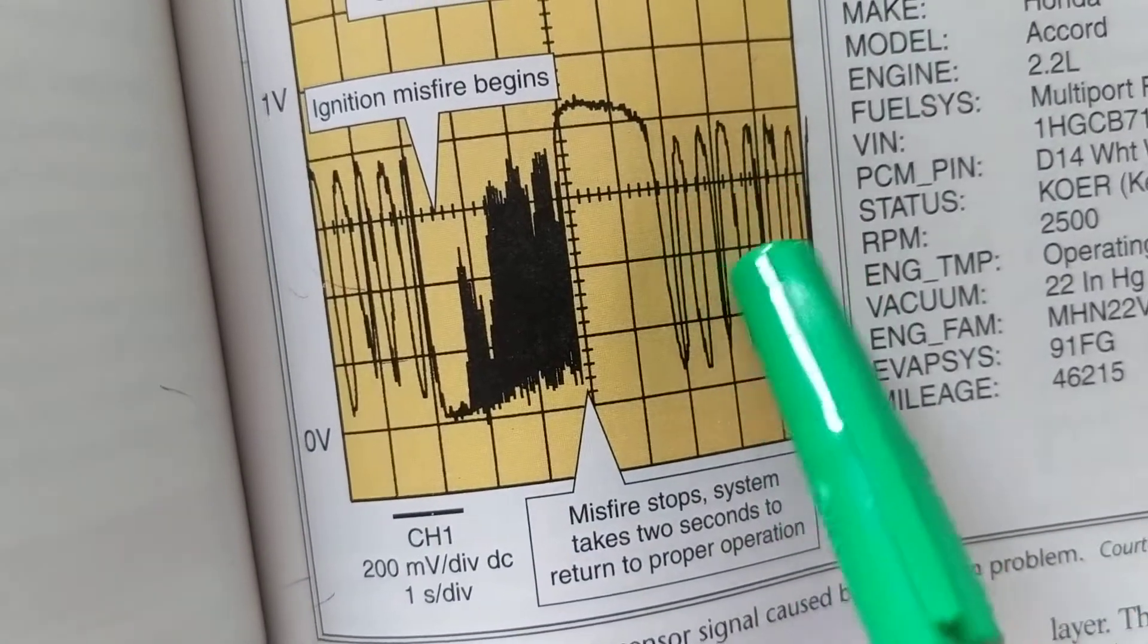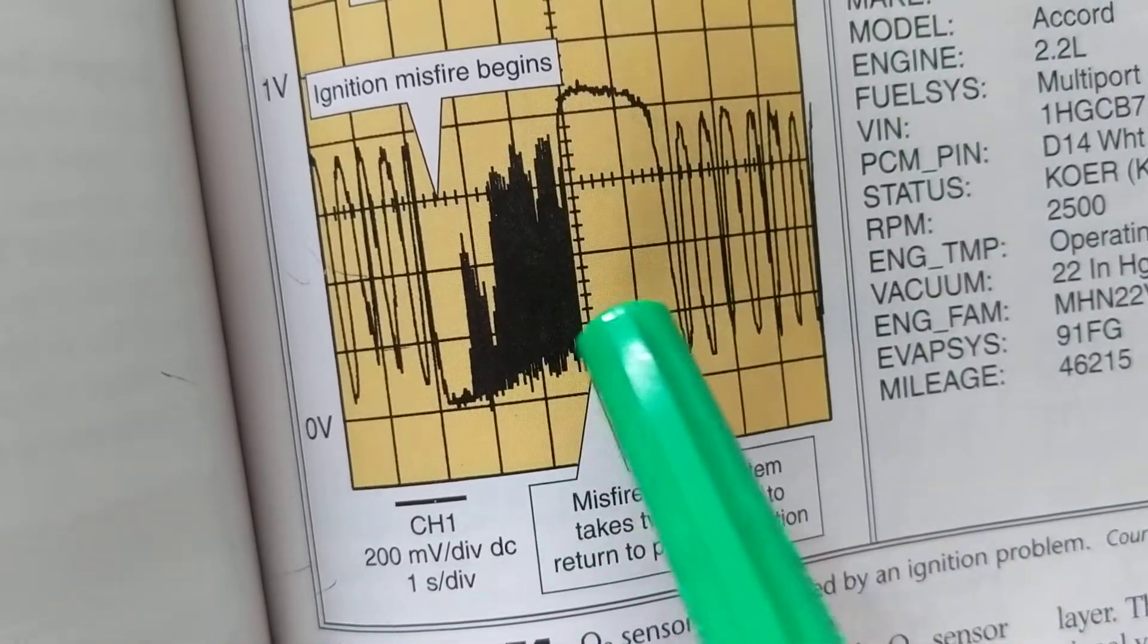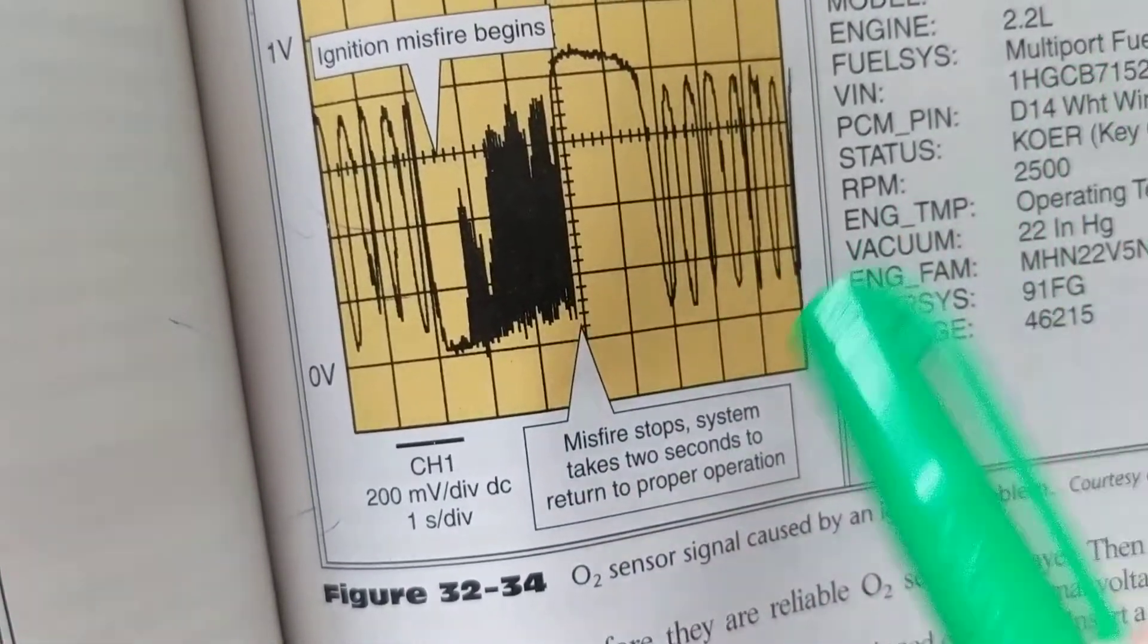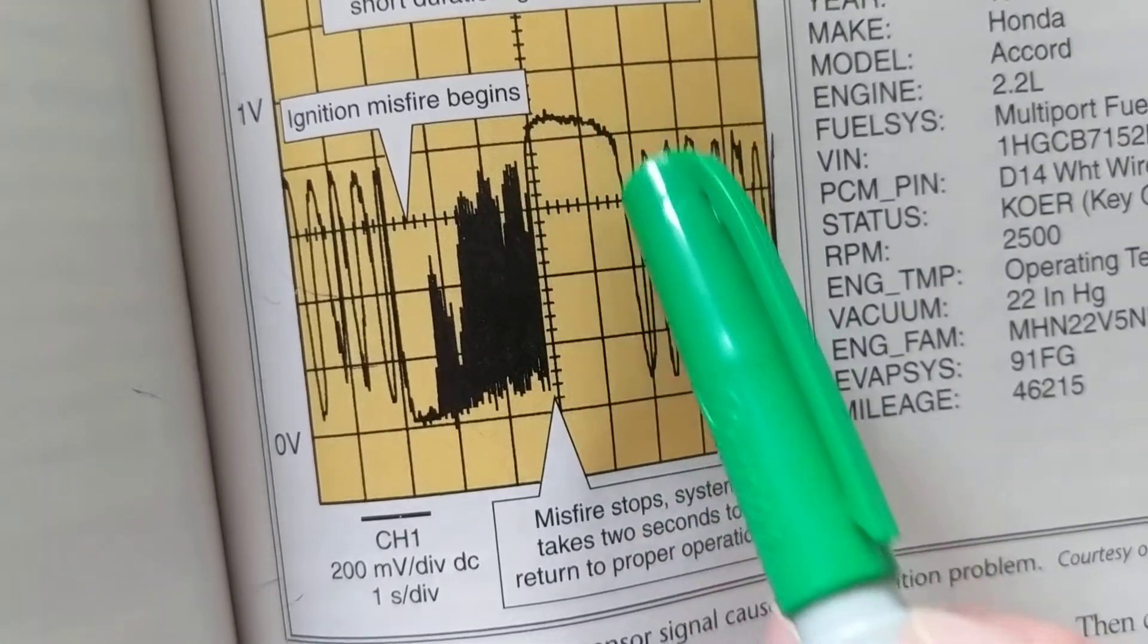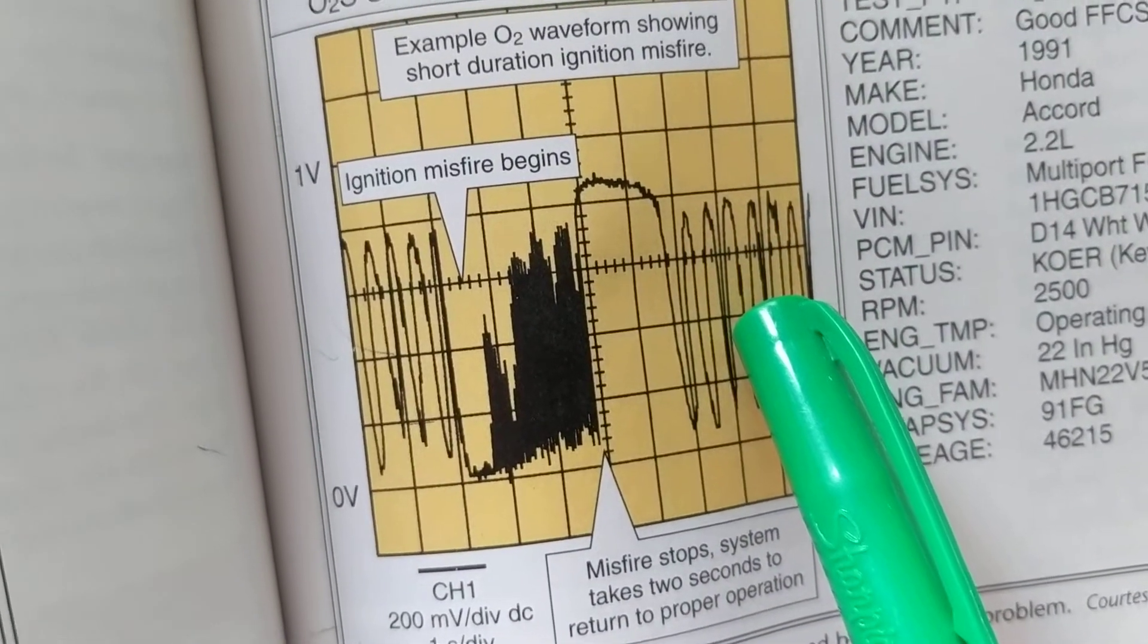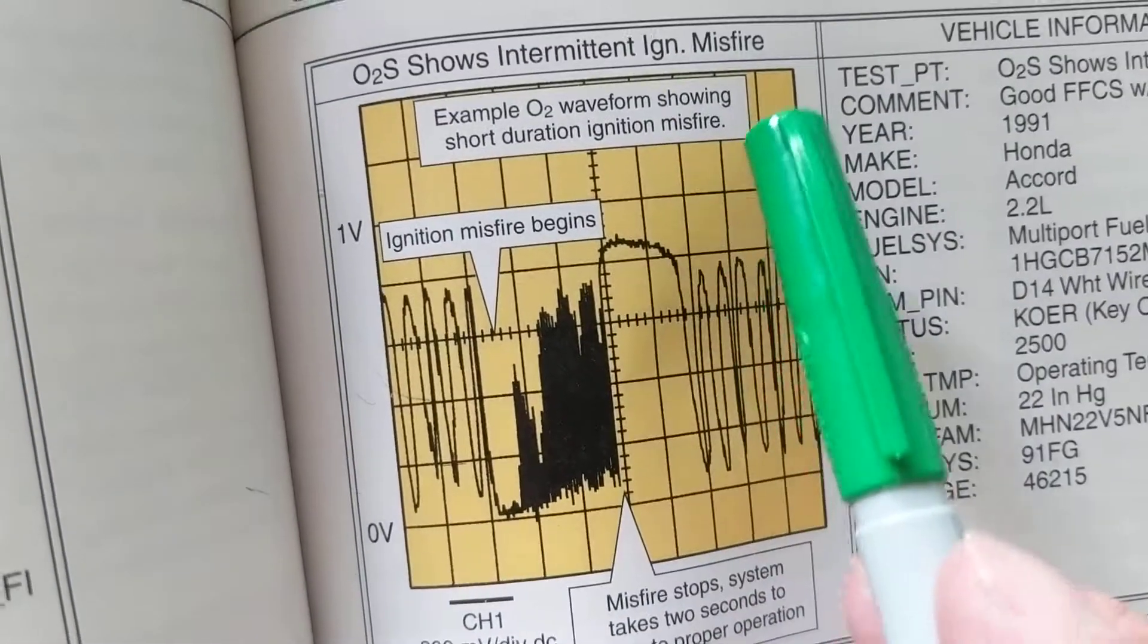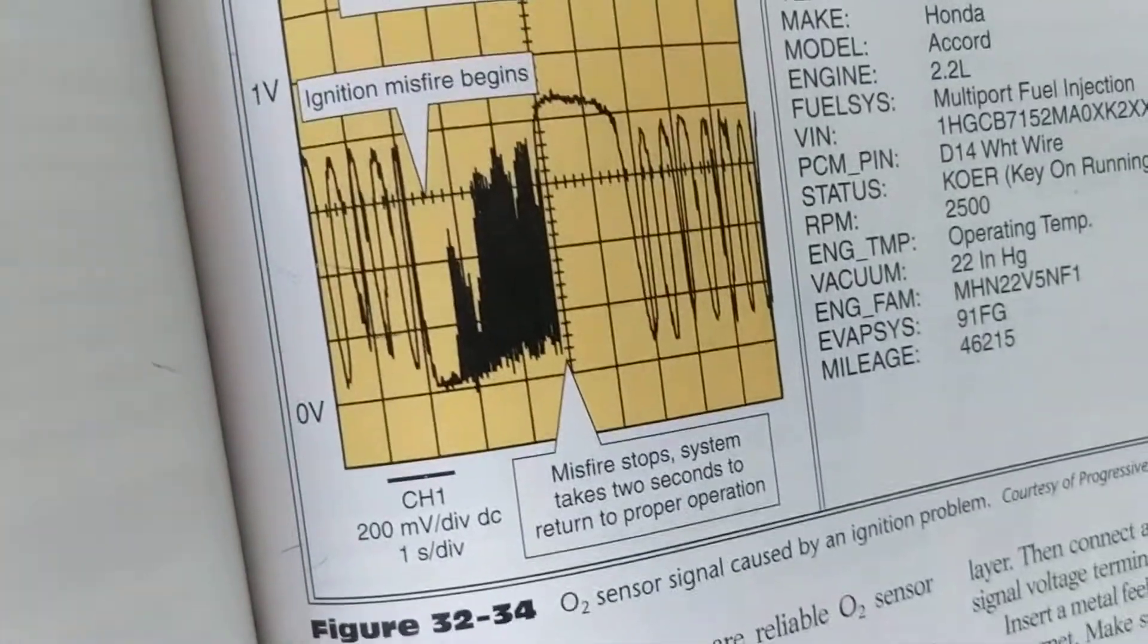This is an ignition misfire. It takes two seconds to return to proper operation. You see, two seconds, then it goes back. This is showing you have to look at the oxygen sensor output. The check engine light is telling you if it's bad enough there's a misfire.